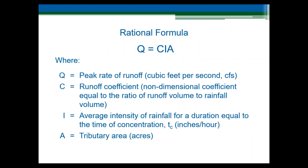Let's go through how we apply the rational method to calculate a two-year peak flow rate. The rational method is truly as simple as multiplying three numbers together, but finding the right three numbers takes some work.